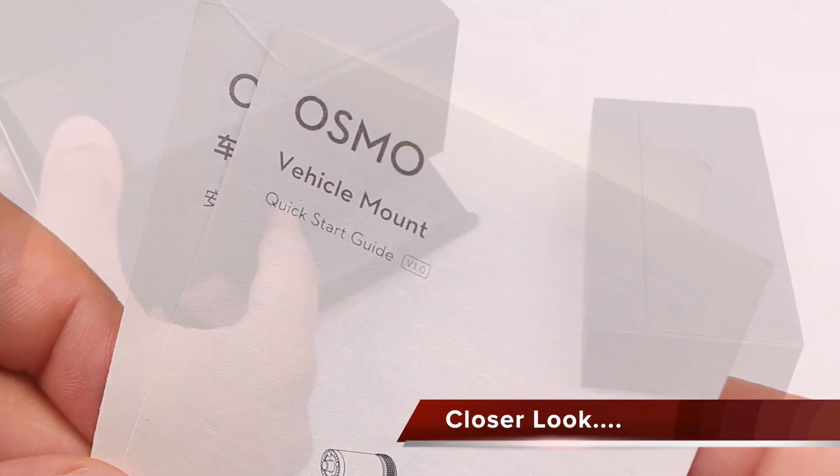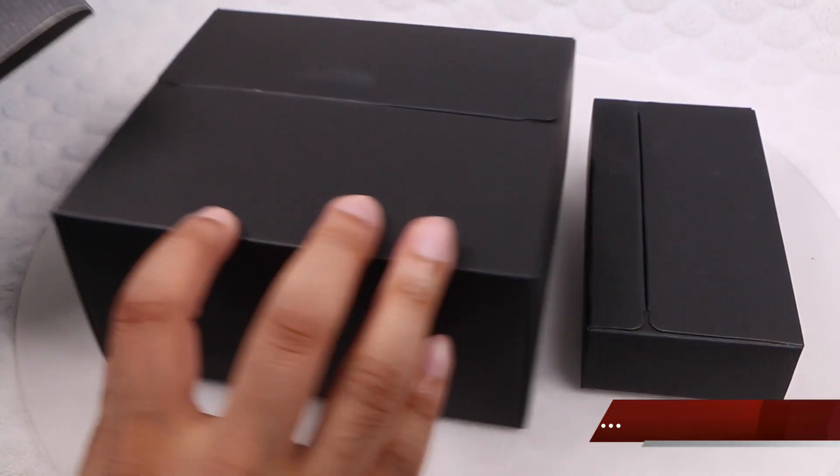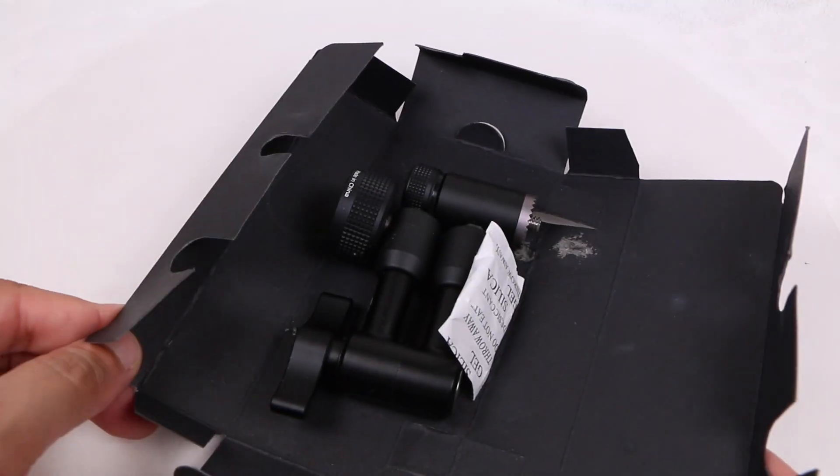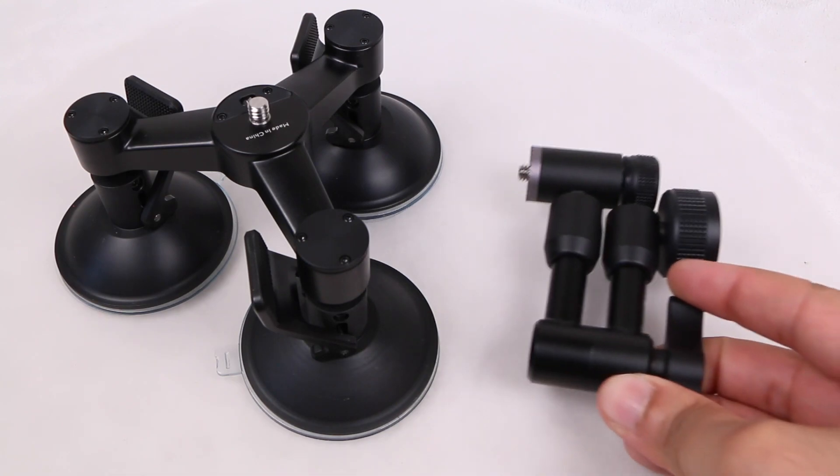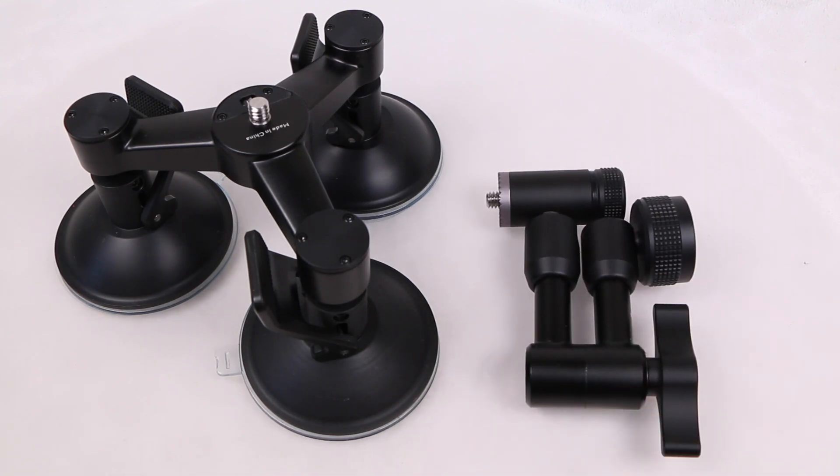Alongside a brief user guide, the box contains the two pieces that create the entire design: the triple suction cup mount, as well as an adjustable arm, both of which can be purchased separately if the need arises.